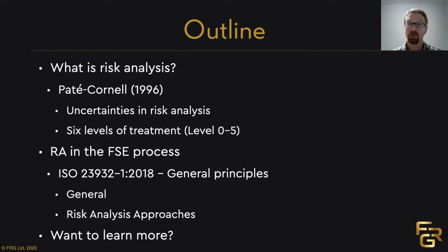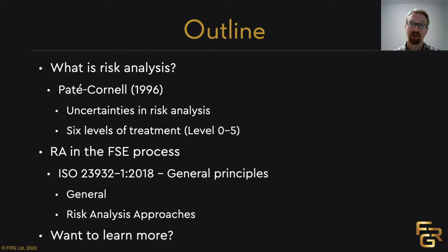The reason we're interested in this is that one of the main documents in ISO — the standardisation organisation — is ISO 23932. The latest version is from 2018 and it's called General Principles. This document describes how you do risk analysis in fire safety engineering and how you design buildings. The approach used was basically Pate-Cornell's approach, which is why I'll start there before talking about ISO 23932. Finally, I'll tell you where to go if you want to learn more, including tips on university courses.